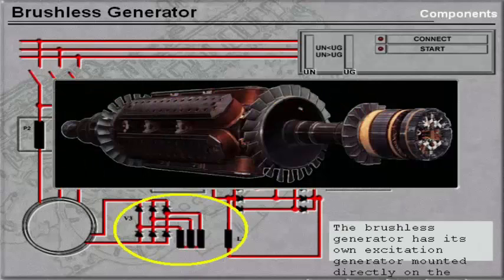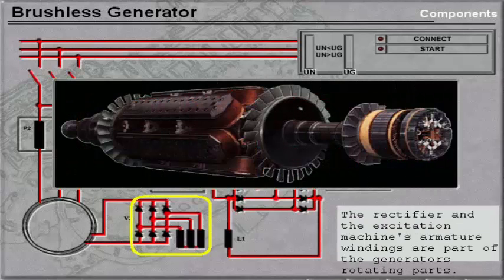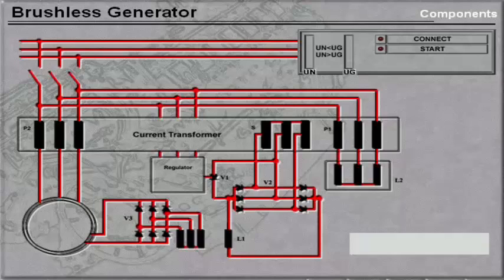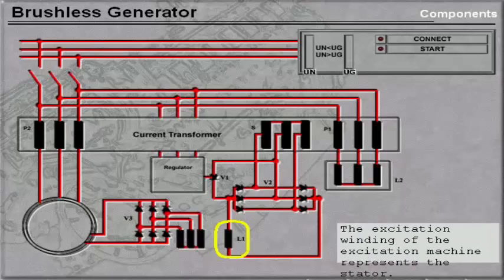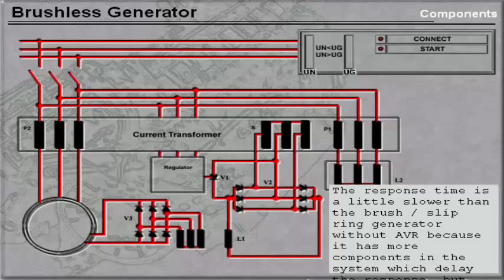The brushless generator has its own excitation generator mounted directly on the generator shaft. The rectifier and the excitation machine's armature windings are part of the generator's rotating parts. The excitation winding of the excitation machine represents the stator. The response time is a little slower than the brush-slip-ring generator without AVR, because it has more components in the system which delay the response, but does not have the disadvantages mentioned under the brush-slip-ring system.